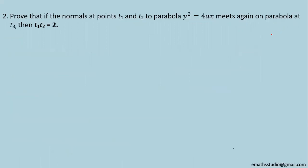Here I am going for the second one. Prove that if normals at points t₁ and t₂ to parabola y² = 4ax meets again on parabola at t₃ then t₁ · t₂ = 2. Now according to previous proof I can say that normal at t₁ if it meets parabola again at point whose parameter is t₃ then t₃ = -t₁ - 2/t₁.